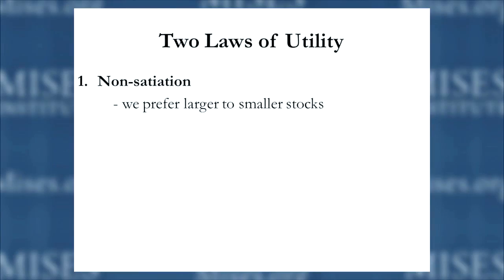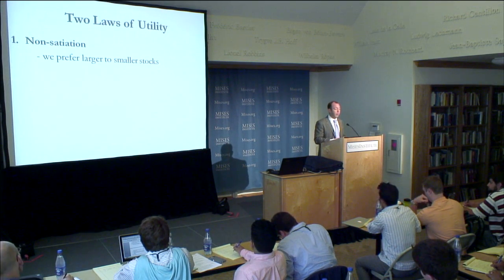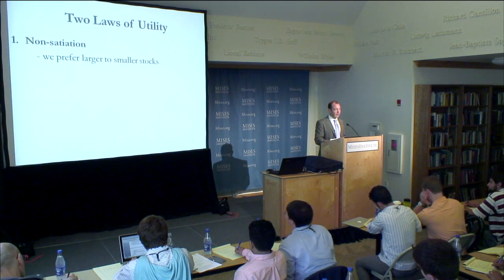Within utility, we have two laws. The first is what we call non-satiation: you would always prefer to have more of a certain good to less of it. When I talk about stocks of goods, I mean homogenous goods — you'd prefer to have five bottles of water available to you rather than four, rather than three, and so forth. The more units of a good you have, the greater number of needs will be satisfied. Since you value satisfying needs and alleviating discomfort, you'd always prefer to have more discomfort alleviated than less, and the more of a good you have, the more wants you can satisfy.